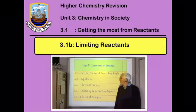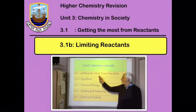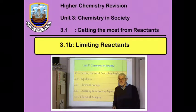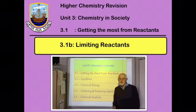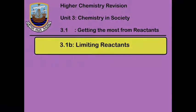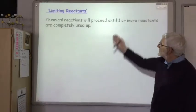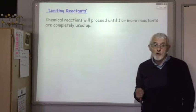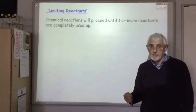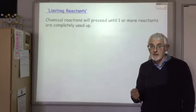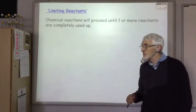This is the second lecture on topic 3.1 and in this lecture we're going to look at the concept of the limiting reactant and its evil twin sister, excess. Chemical reactions proceed until one or more reactants are completely used up. As soon as you've run out of one reactant the reaction will stop.